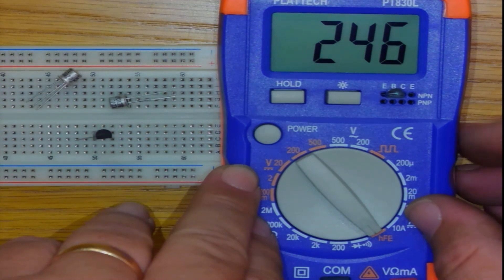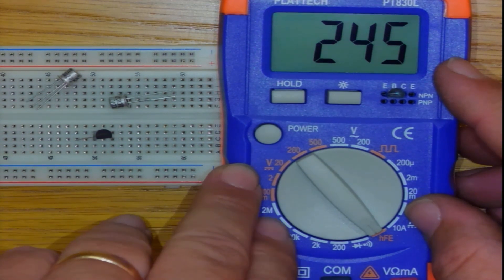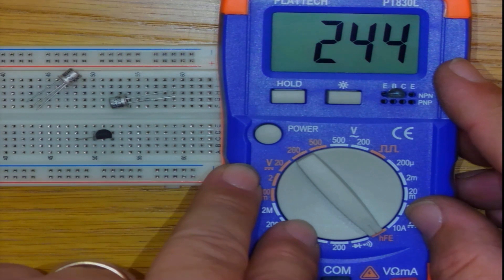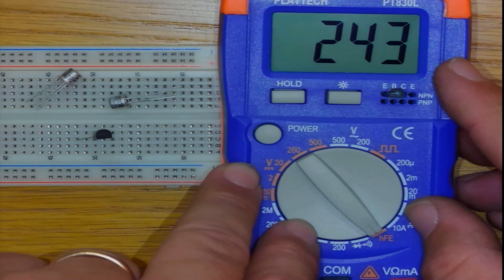In this case, the reading gives me 246. Remember beta doesn't have a unit. It is just a ratio of input current towards output current, the base current and the collector current.